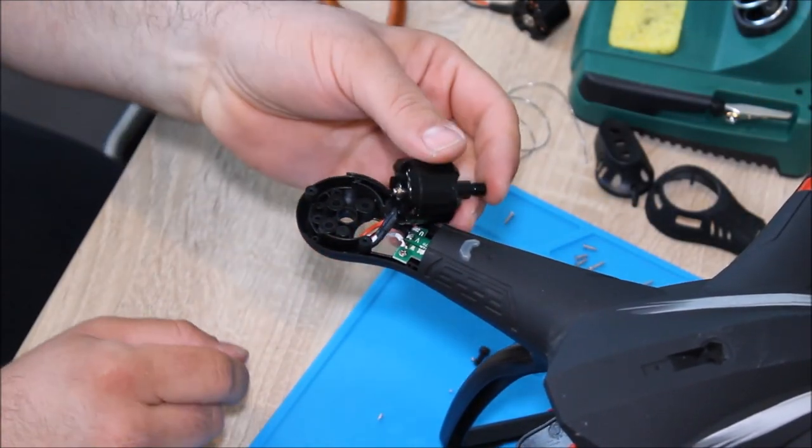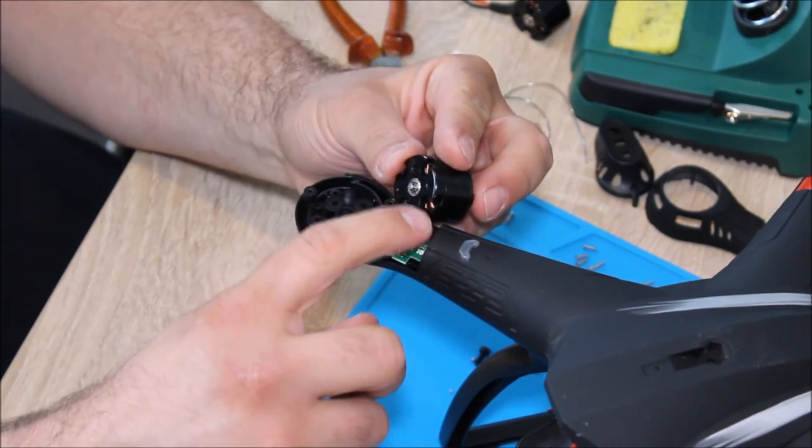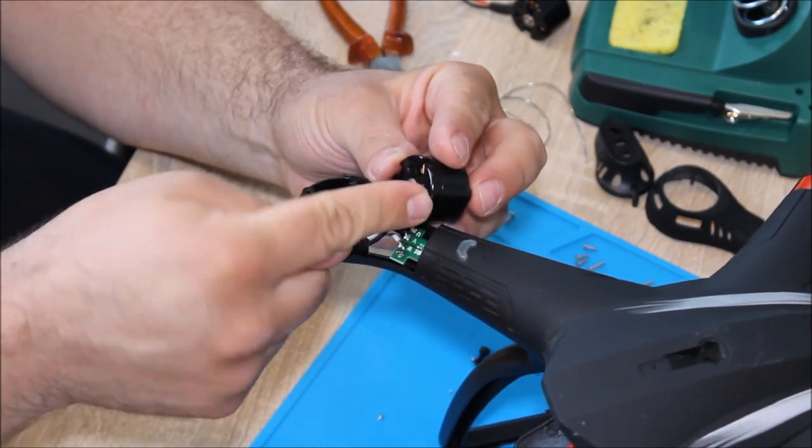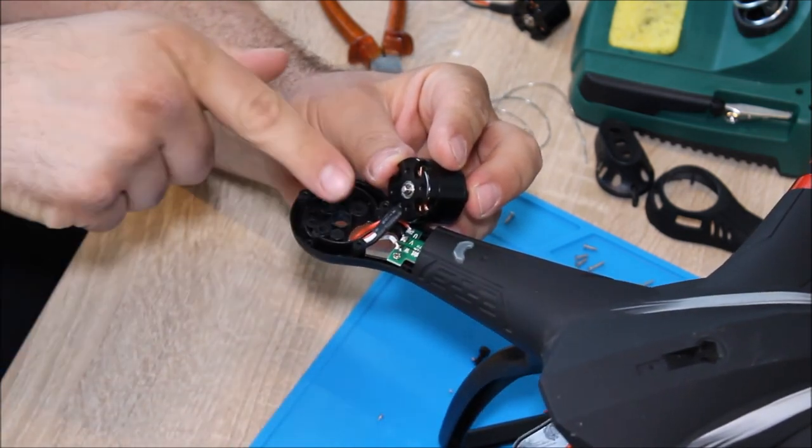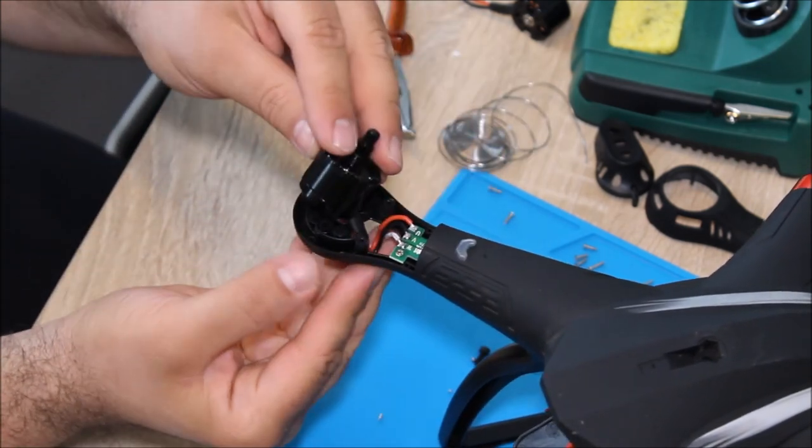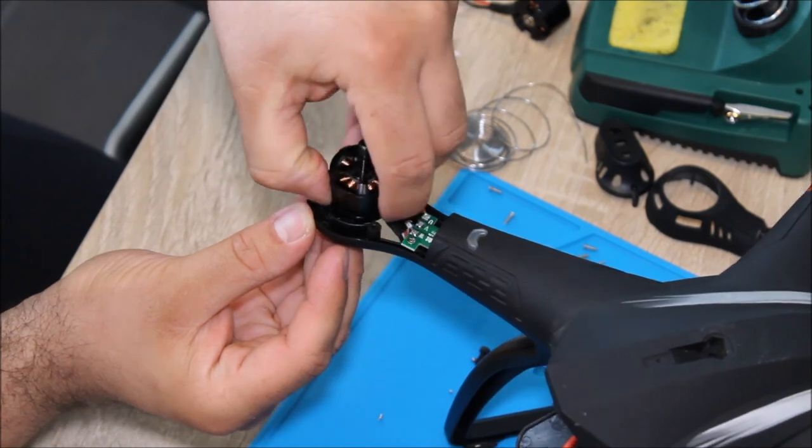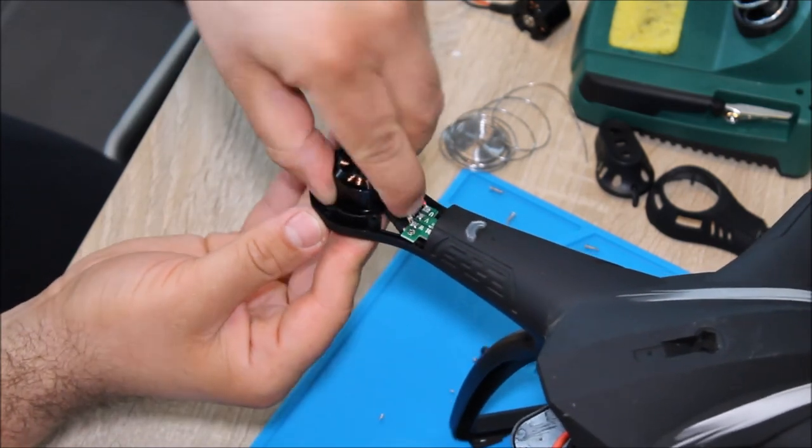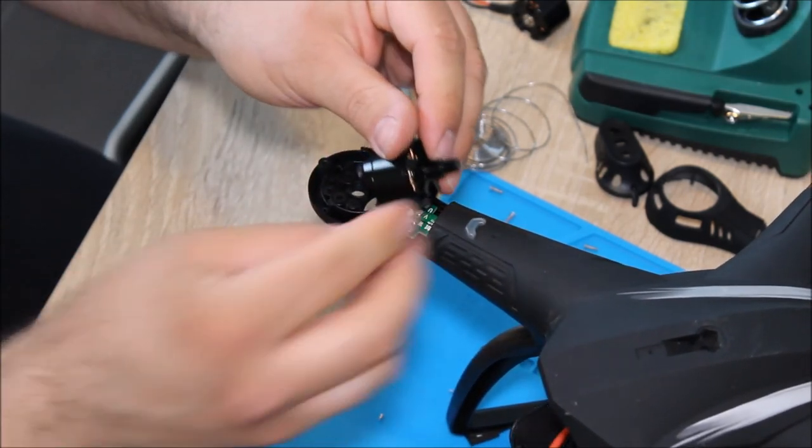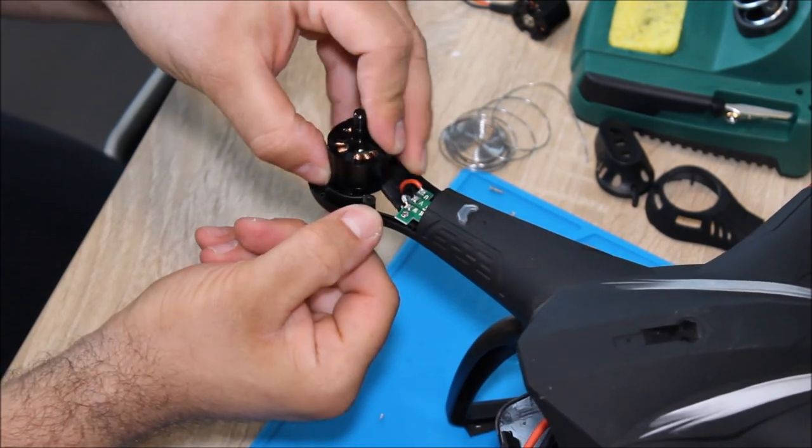When putting it back together you need to make sure that that little part piece here goes onto that little plastic piece. You have to slide it up a little bit on there so everything lines up when you turn it upside down again to put in the screws.